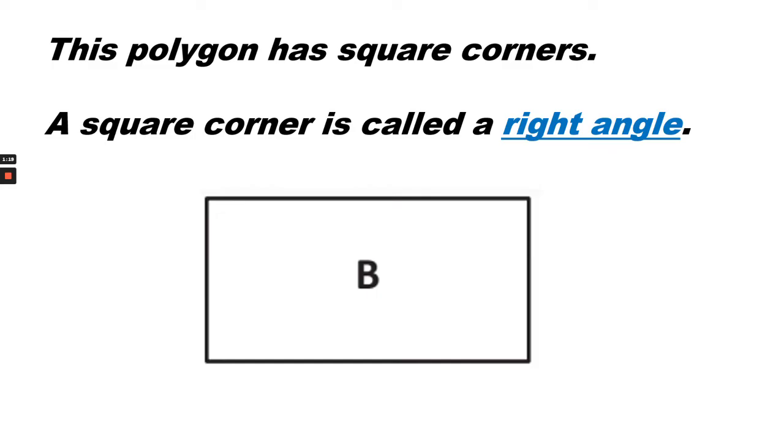This polygon has square corners. A square corner is called a right angle.